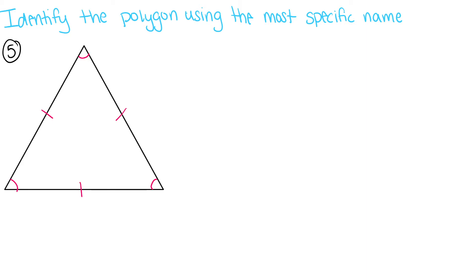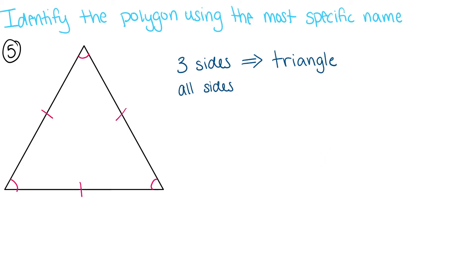Here, we have a polygon with three sides, which means it's a type of triangle. The opposite sides are congruent and all three angles are congruent, which means this is an equilateral triangle.